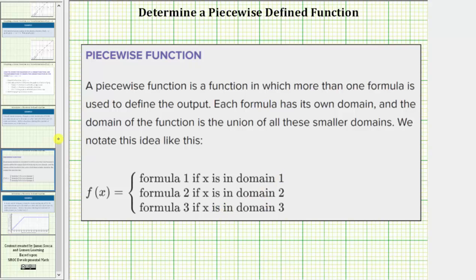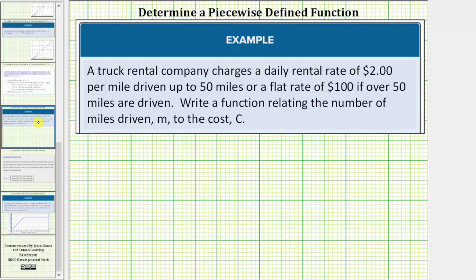So going back to our example, we will need two formulas, or two rules, to determine the cost. So our function c of m is equal to, the first rule is two dollars per mile driven, up to fifty miles, and because m is the number of miles driven, c of m equals two times m, or two m, if m, the number of miles driven, is greater than or equal to zero and less than or equal to fifty.